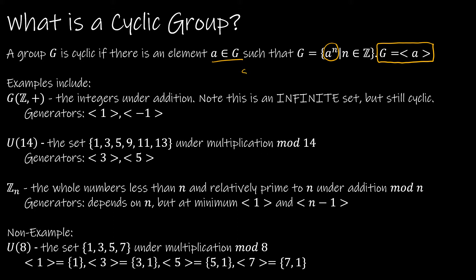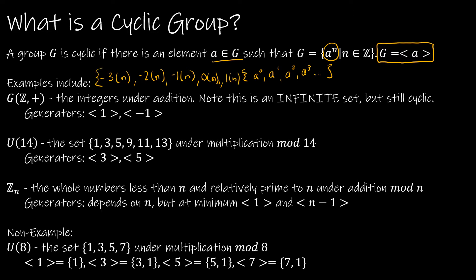Essentially we're saying A to the 0, A to the 1st, A to the 2nd, A to the 3rd. Now this is for multiplicative notation. But recall if you have additive notation, that's going to be negative 3 times whatever the generator is, negative 2 times the generator, negative 1 times the generator, 0 times the generator, 1, and so on. Just keep in mind if it's additive we're still going to be multiplying, and if it's multiplicative we're going to be taking it to powers.